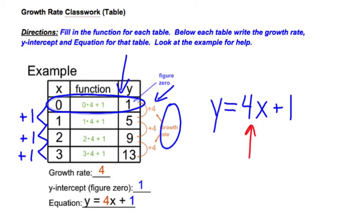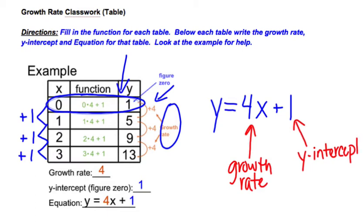The number you multiply by x is your growth rate, or in other words, as we move from one figure to the next, how many more tiles are you adding each time? The plus 1, that is the y-intercept. Or in other words, how many tiles are in figure 0? How many tiles do you start with? That's also where your line is going to cross the y-intercept or the y-axis.